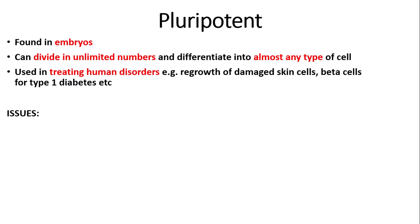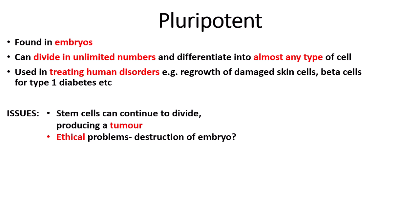However, there are many issues associated with pluripotent stem cells. The first is that because they can divide in unlimited numbers, this can lead to the formation of a tumour, which would obviously be detrimental. Also, there are ethical problems: because pluripotent stem cells are found in embryos, you need to destroy the embryo to extract them, which is considered unethical by some. There is also the question of whether it is right for humans to be cloned to produce these embryos.